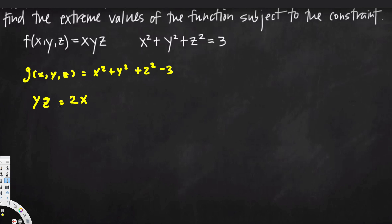The partial derivative of f with respect to y gives xz, treating x and z as constants. The partial derivative of g with respect to y is 2y. Similarly, the partial derivative of f with respect to z is xy, and for g it is 2z.